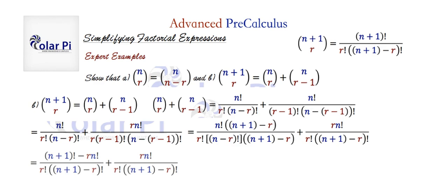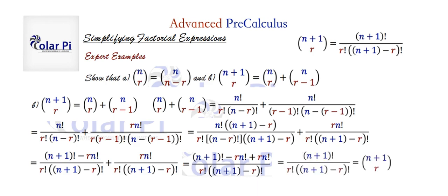Since the denominators are equal, we write one denominator and combine the numerators. Clearly, negative r times n factorial plus r times n factorial turns into zero. What we're left with is n plus one factorial in the numerator over the common denominator, which is then exactly equal to n plus one choose r, as desired. I hope you've enjoyed this video and keep watching. Take care.